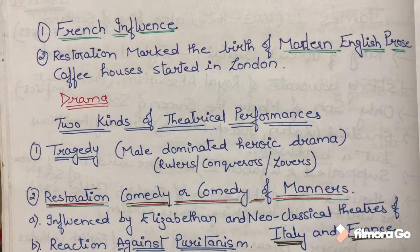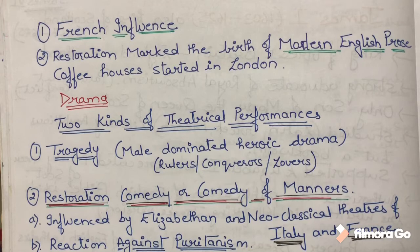Now let's talk about the literary characteristics of this age. First is French influence. Why did French influence happen? Because after Charles I's death penalty, Charles II left England and spent time in France, where he studied French dramas, novels, and other literary works. We can see that French influence reflected in the literature of this age.